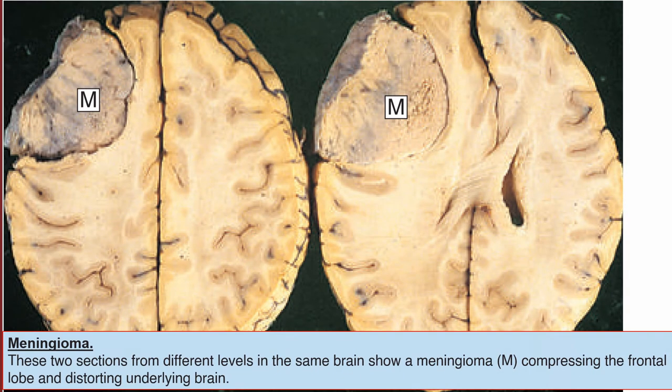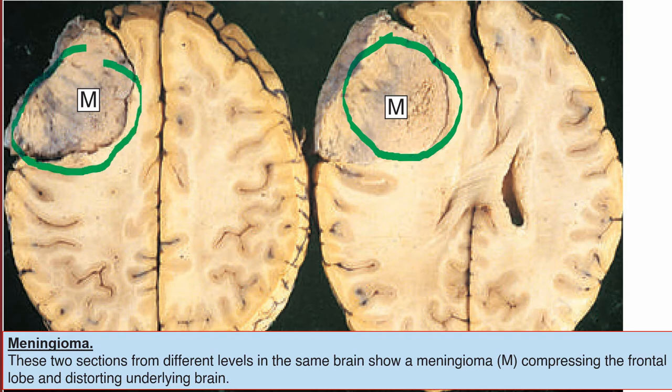Here we can see the gross picture of meningioma — two sections from different levels of the same brain. The tumor mass is compressing the normal brain parenchyma in the frontal lobe and distorting the underlying brain. From this picture, we must appreciate that a patient presenting with meningioma may present with signs and symptoms similar to an anterior cerebral artery (ACA) stroke, because the meningioma compresses the frontal lobe.